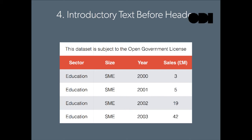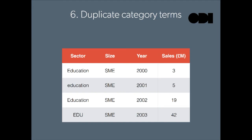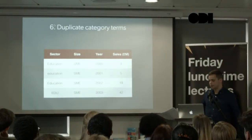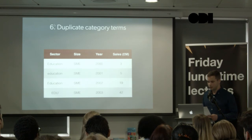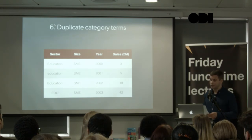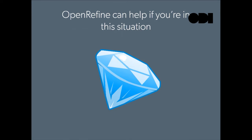Empty cells — this is probably the most egregious error because it's a data accuracy issue. We could perhaps guess that a blank cell should say 'SME,' but we're guessing and we might get it wrong. Then there are duplicate terms: on the left-hand side we've got 'education' spelled in various different ways — presumably these should all be grouped together as the same thing. But some data cleanup has to happen at some stage. If you visualize this straight away, these all show up as different categories, which is unnecessarily problematic. These are the kinds of things we see time and time again that are all really easy to solve.